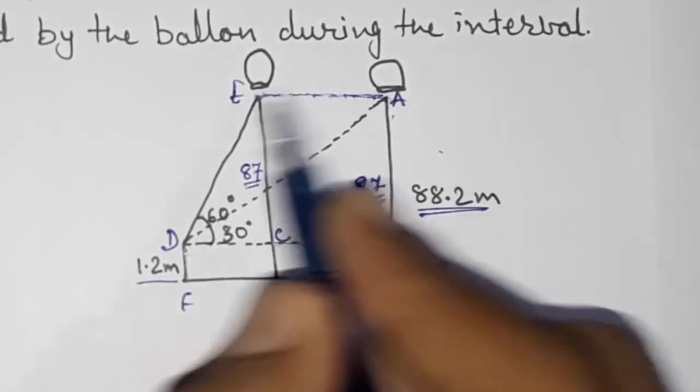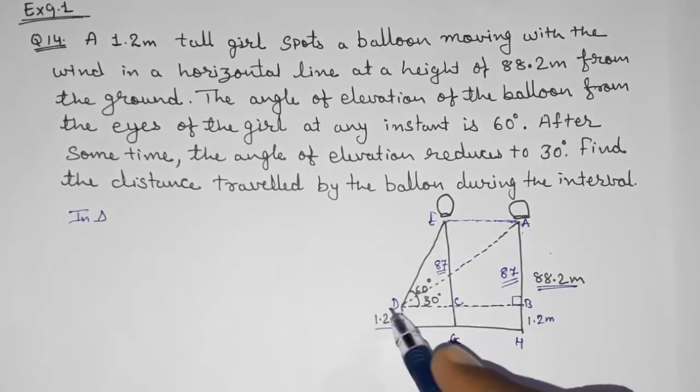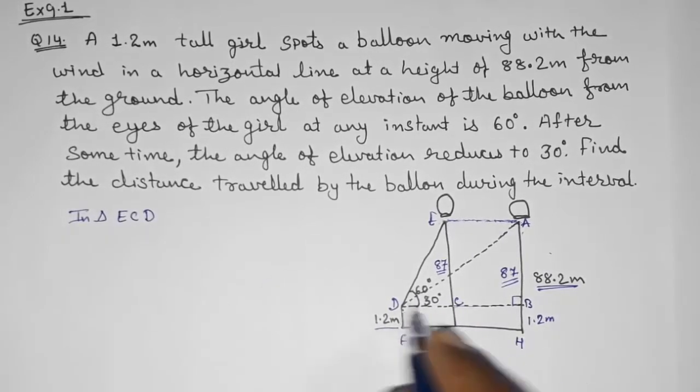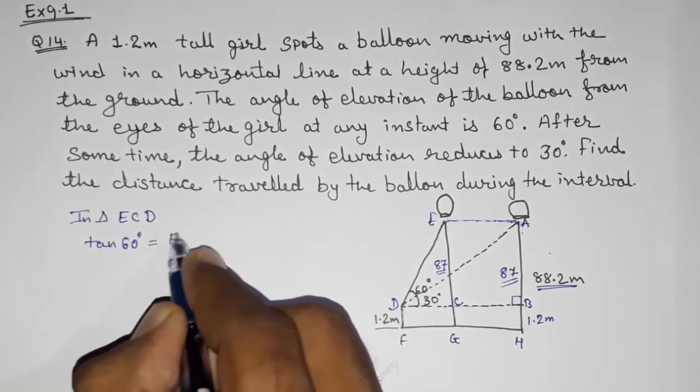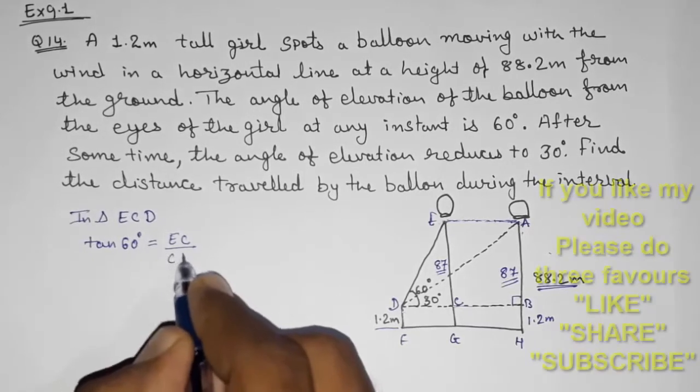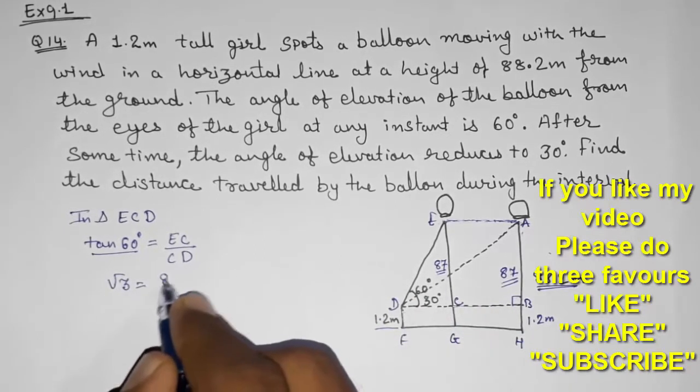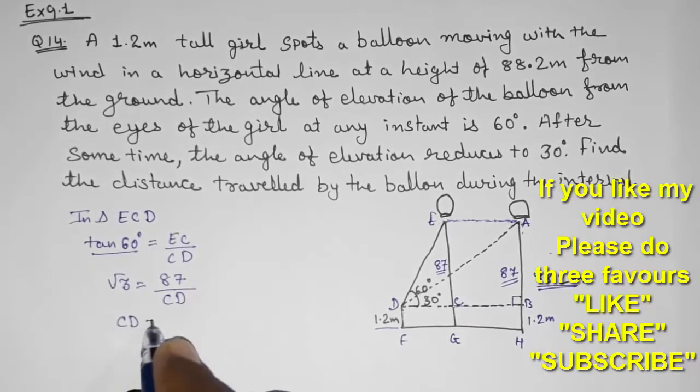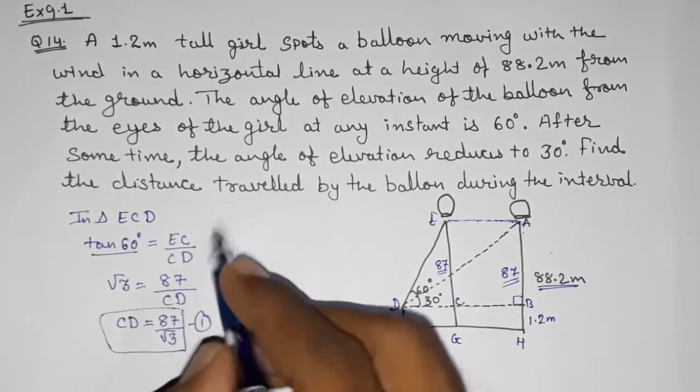So let us start in triangle ECD. The angle is 60 degrees, so tan 60 degrees equals to EC upon CD. Now the value of tan 60 is root 3, EC that is 87, and CD that we want to find out. So CD will be equal to 87 by root 3. Take it as result number one. You can if you want to rationalize you can rationalize also, but I am not going to rationalize it now.